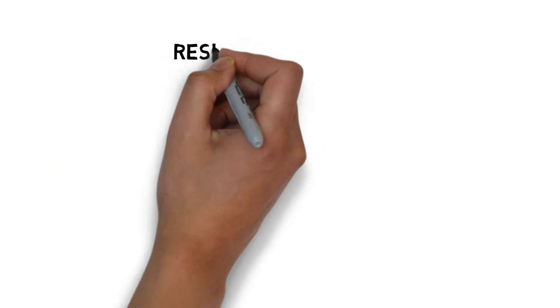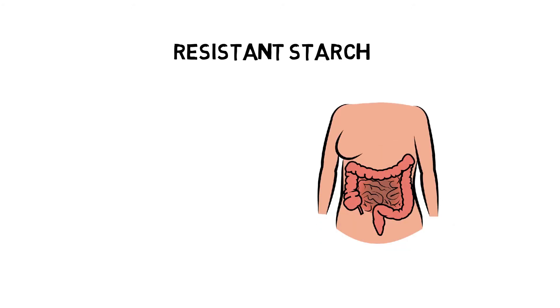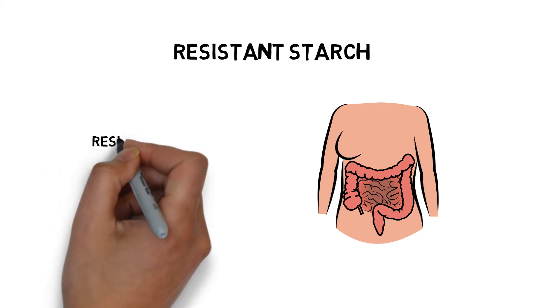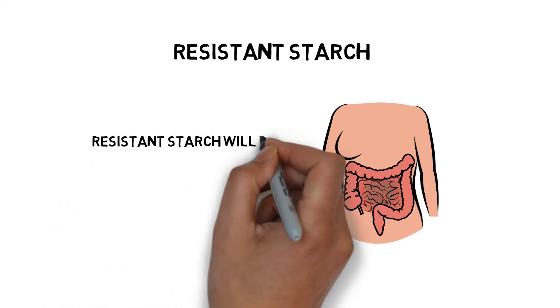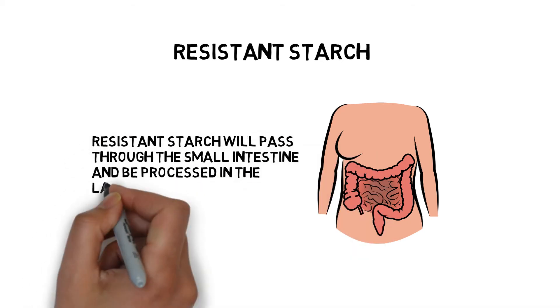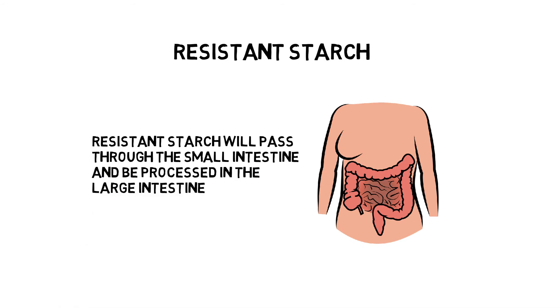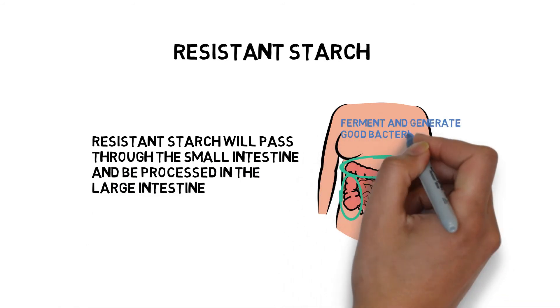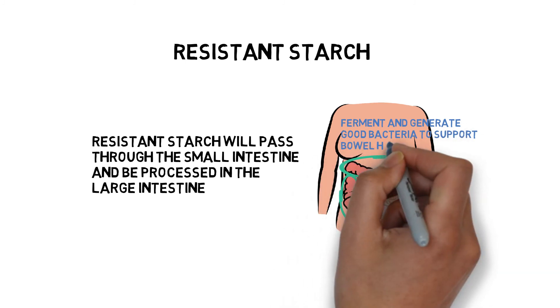Apart from the two categories of fiber, resistant starch is also considered to have the same functionality. Different from fiber which cannot be digested and absorbed at all, resistant starch will pass through the small intestine and be processed in the large intestine, where it will ferment and generate good bacteria to support bowel health.